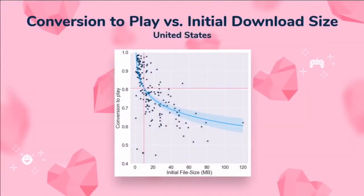For example, if we look at the 10 megabytes mark — which can already be a pretty difficult target to hit for game developers, especially with the standard set by mobile games and pre-existing engines — even in the United States, a 10 megabyte game only reaches a conversion to play of about 80%. That means, even ignoring your game's onboarding or discoverability, if 100 players in the United States find your game, click on it, and want to play it, 20% of them will just leave during the loading phase. That's pretty substantial.